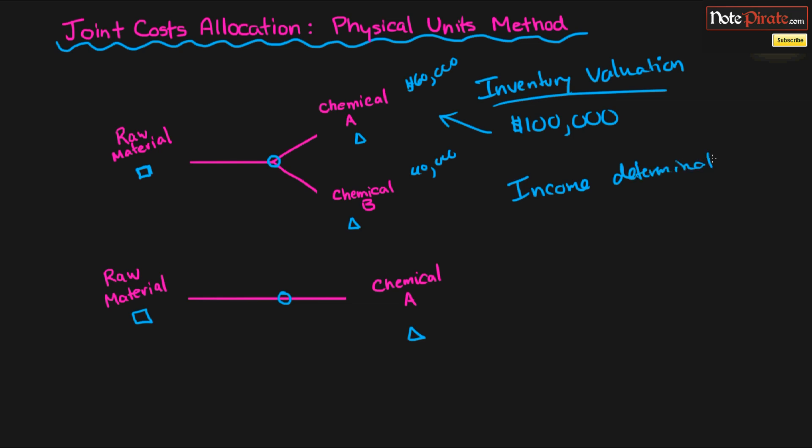And the second reason we allocate costs is for income determination because the only reason, what this means is, we only split our raw material into two different products because each one is profitable. And if each one wasn't profitable, then we wouldn't split it, right? So basically, what we need to do is we need to make sure that we allocate the joint costs in a fair way so that each product yields profit. And if they don't, we're going to have to use a different method, which we'll soon find out.